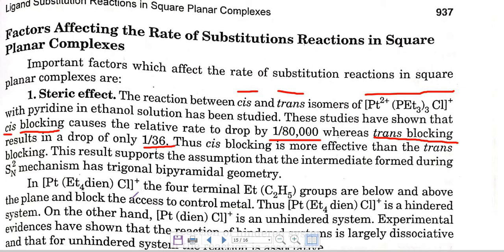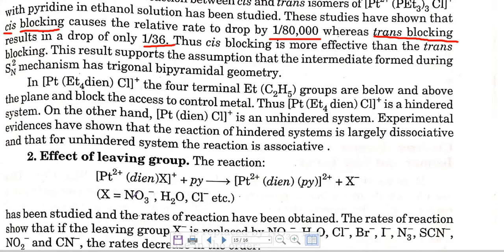This is because the intermediate form during this type of mechanism has trigonal bipyramidal geometry. The intermediate geometry plays a role, and the reason it is role-played is because of the steric effect.